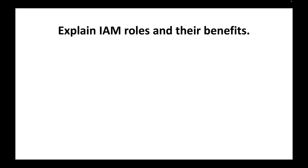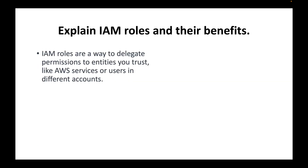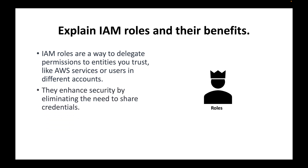The next question is: what are IAM roles and the benefits of using an IAM role? An IAM role is another way to give access to AWS services, as well as giving access to users in a different account to log into your AWS account. IAM roles are a way to delegate permissions to any entities you trust — it could be giving access to a particular AWS service or allowing one AWS account to access services in another AWS account.